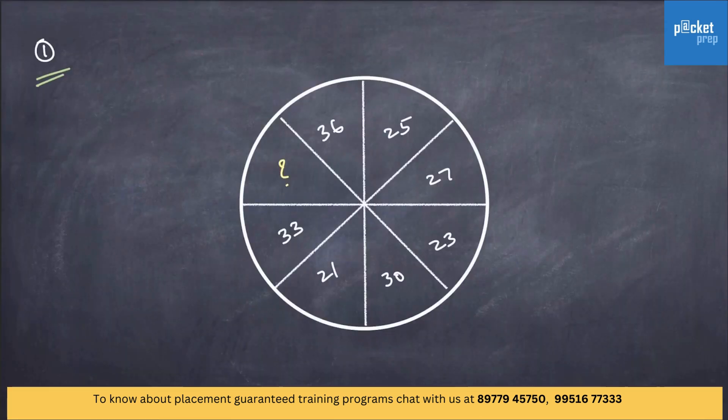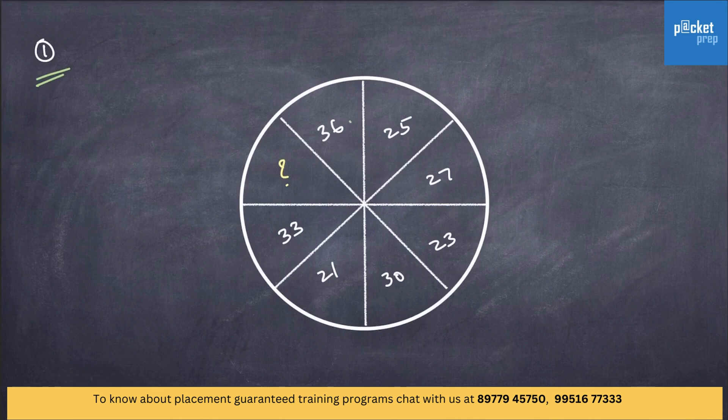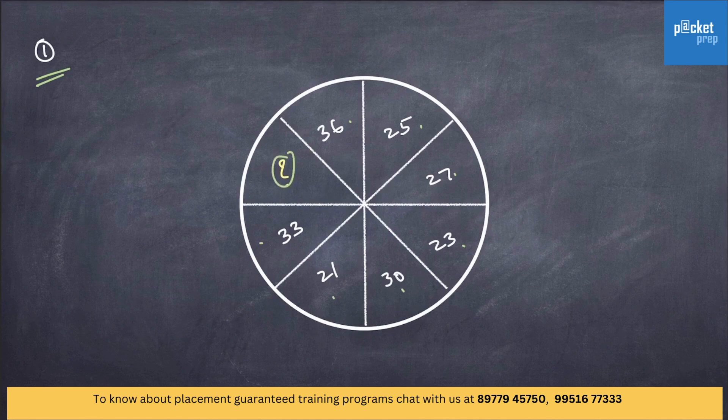Here we go. Here is our first question and the numbers given are 36, 25, 27, 23, 30, 21, 33, and this is the missing term.